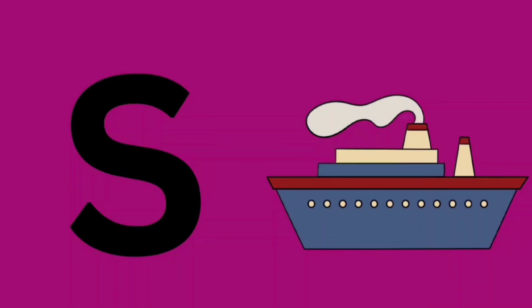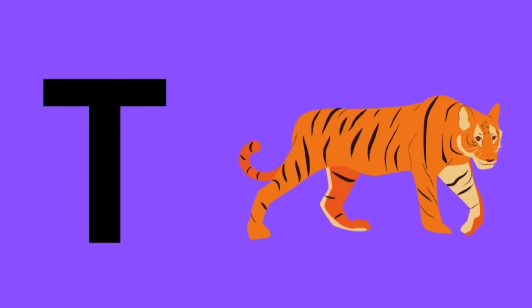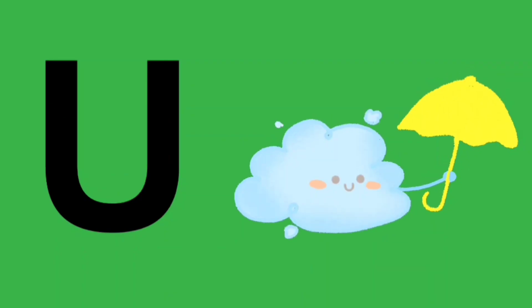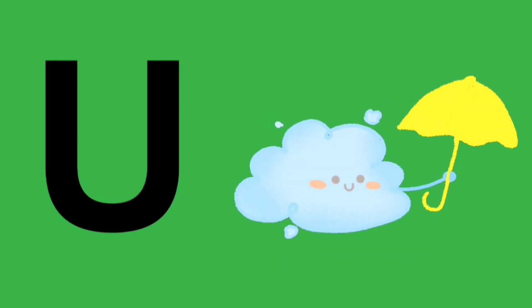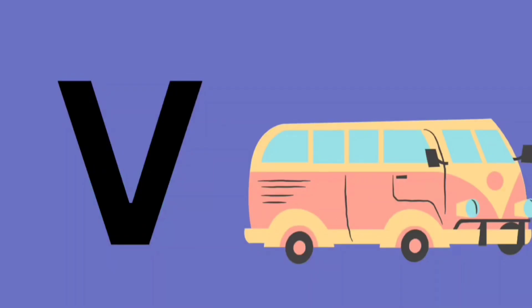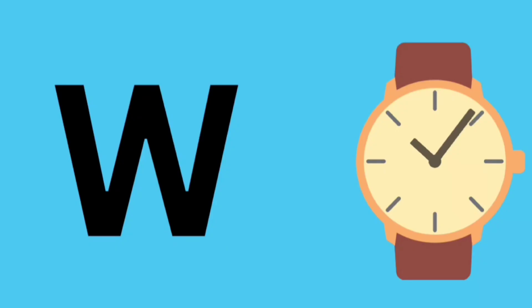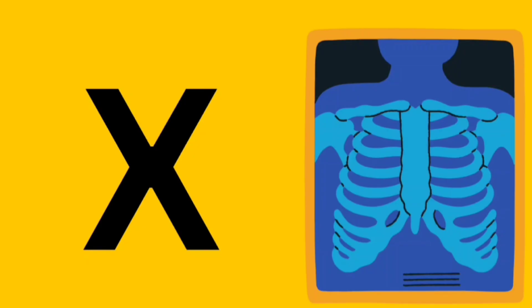S for Sip, T for Tiger, U for Umbrella, V for Van, W for Watch, X for X-Ray.